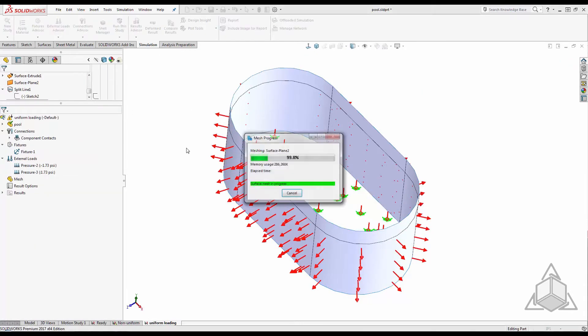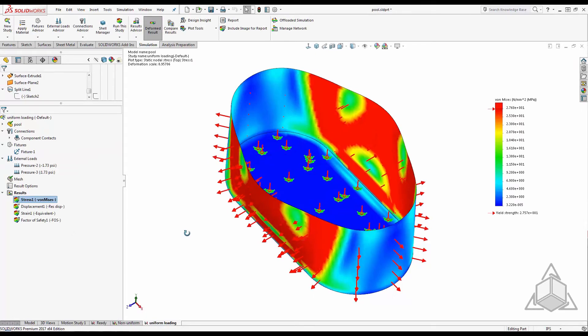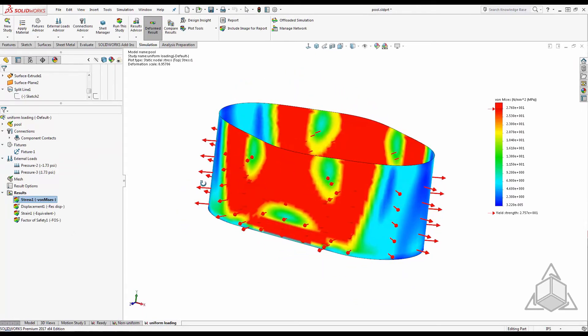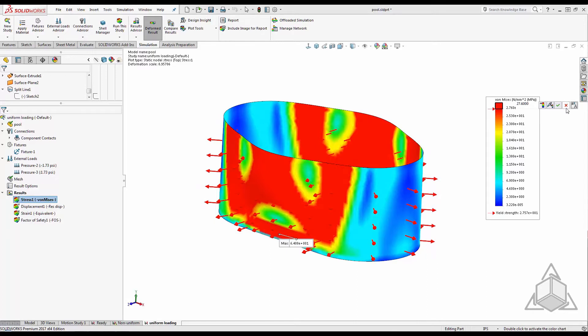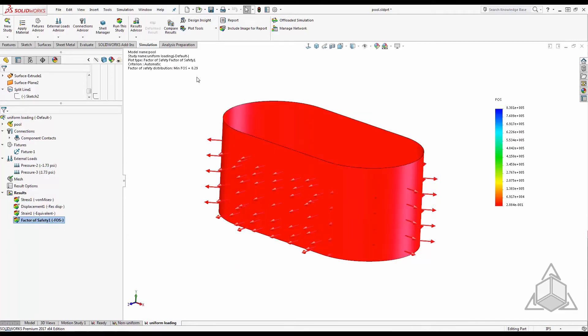The results don't look promising for beating the heat with this pool. I have adjusted the scale to show anything that is yielding to be in red. With a max stress of 60 MPa, this configuration is going to be flooding my yard. A quick look at the factor of safety plot shows this pool has no chance.